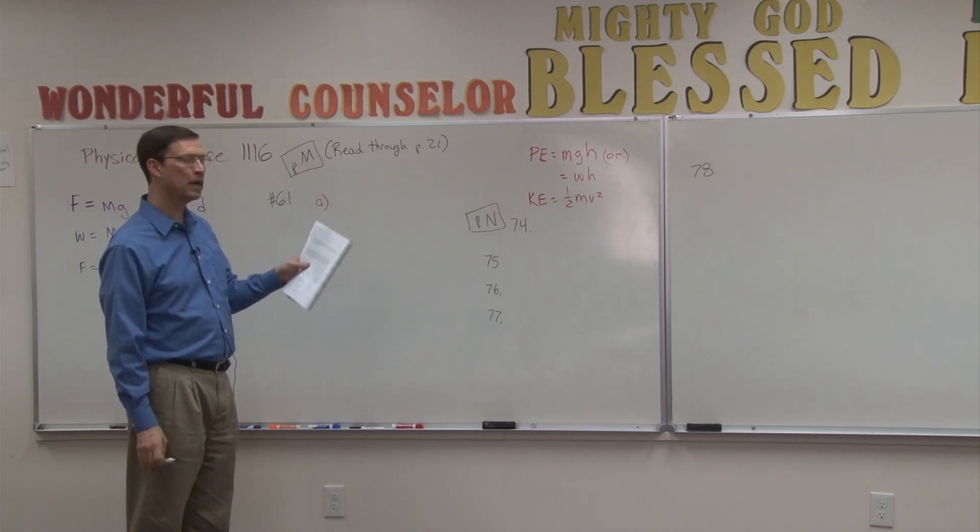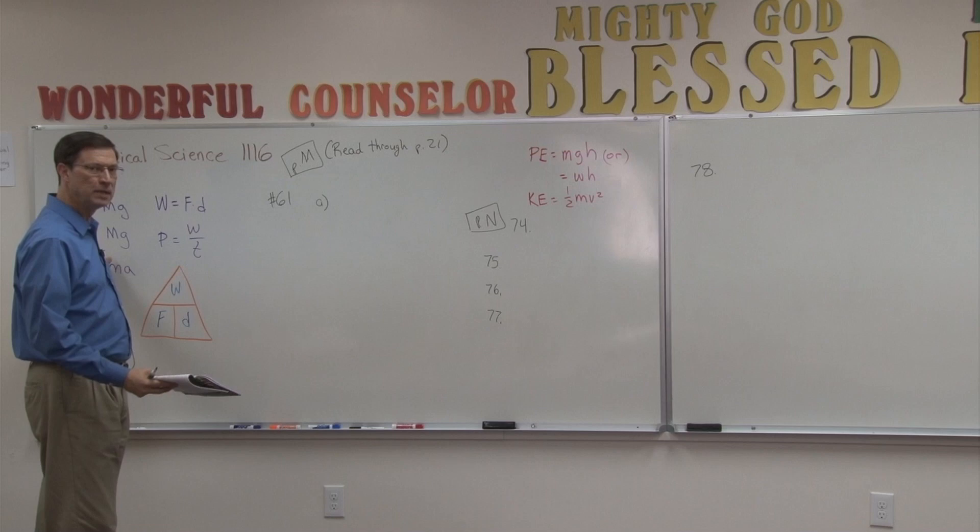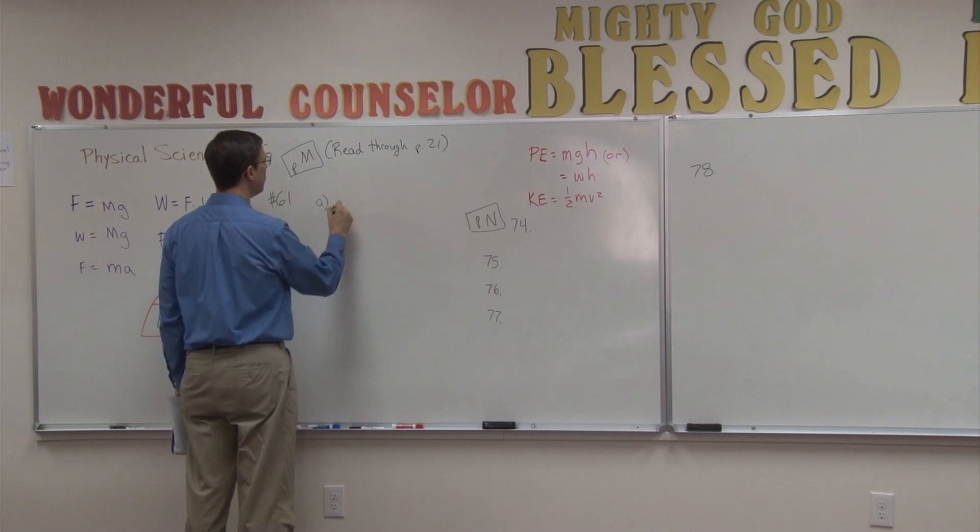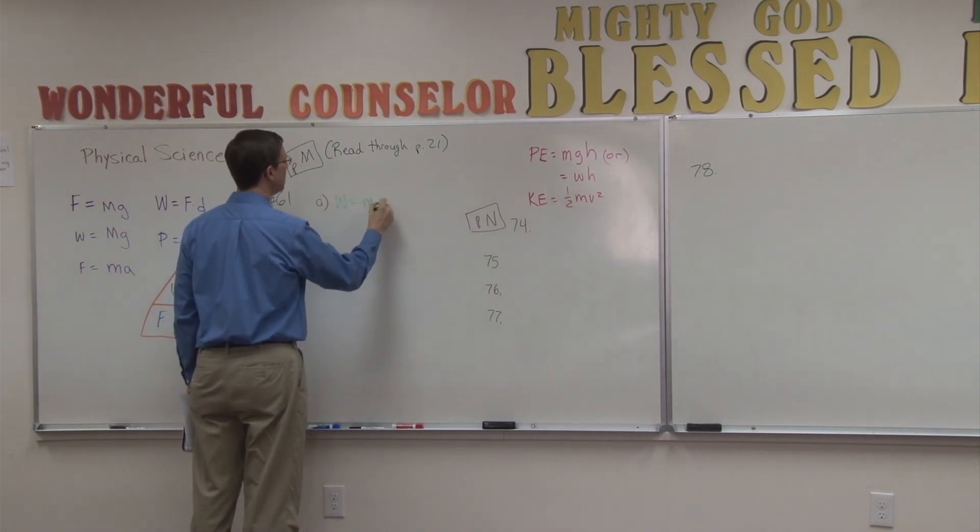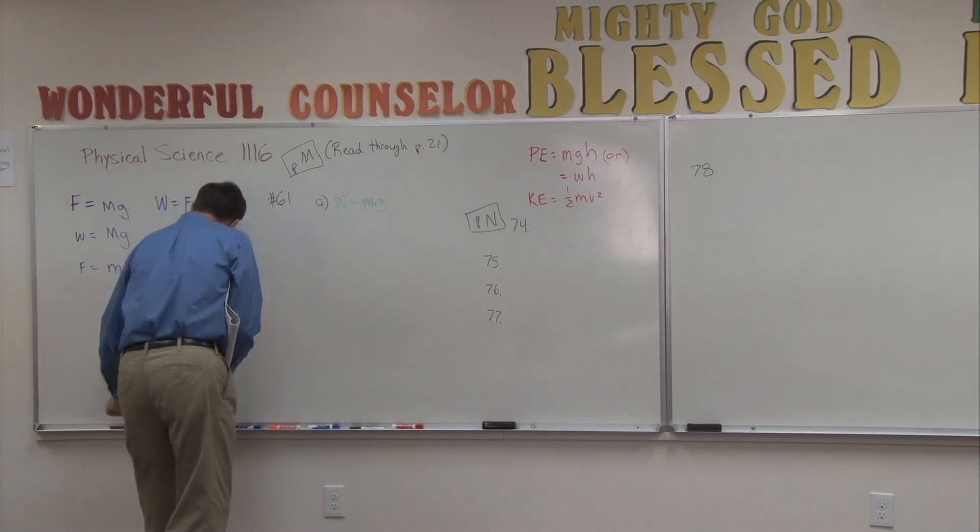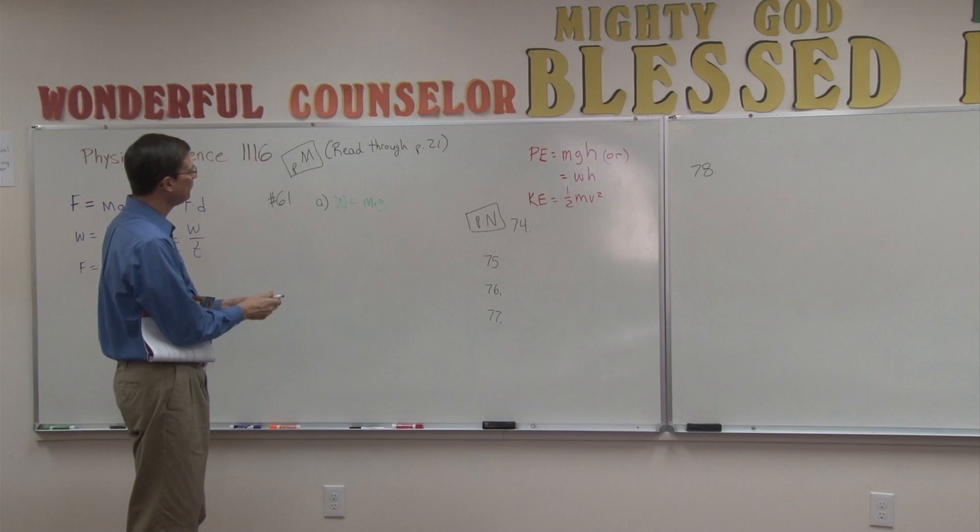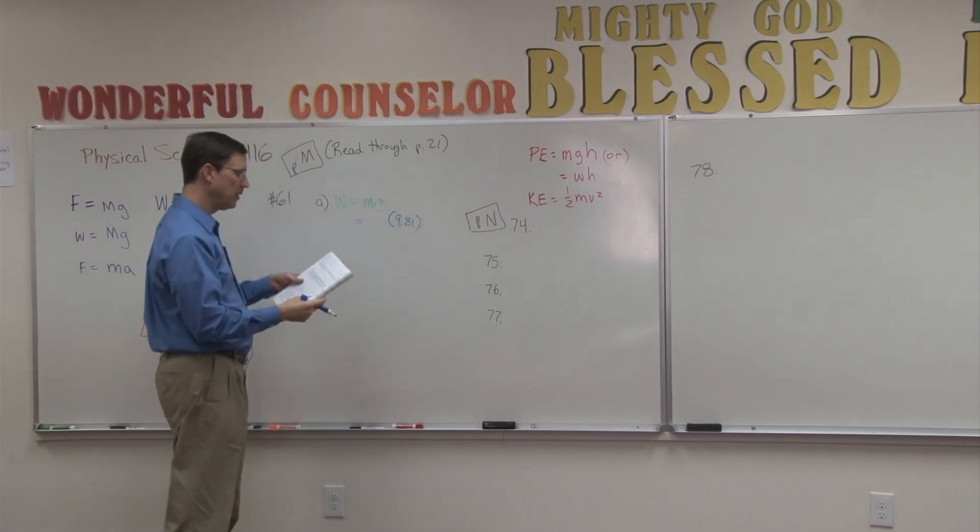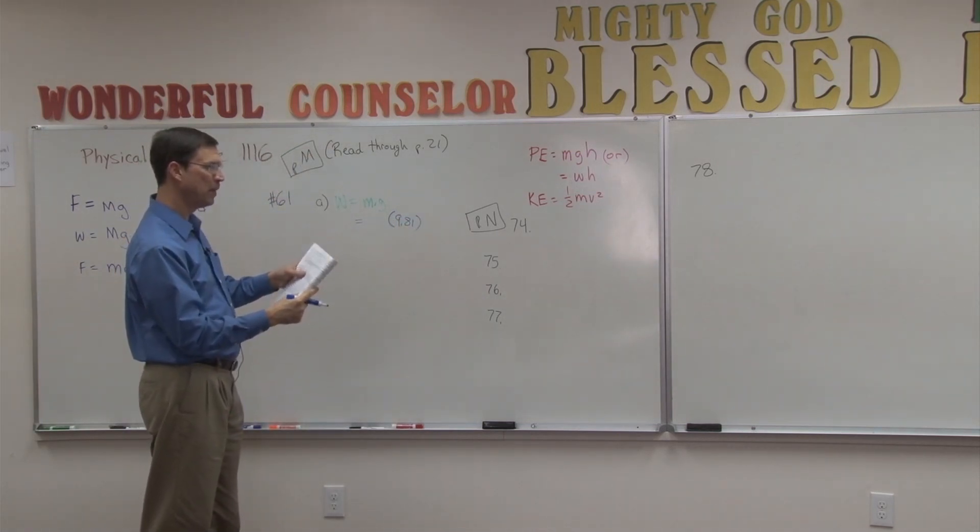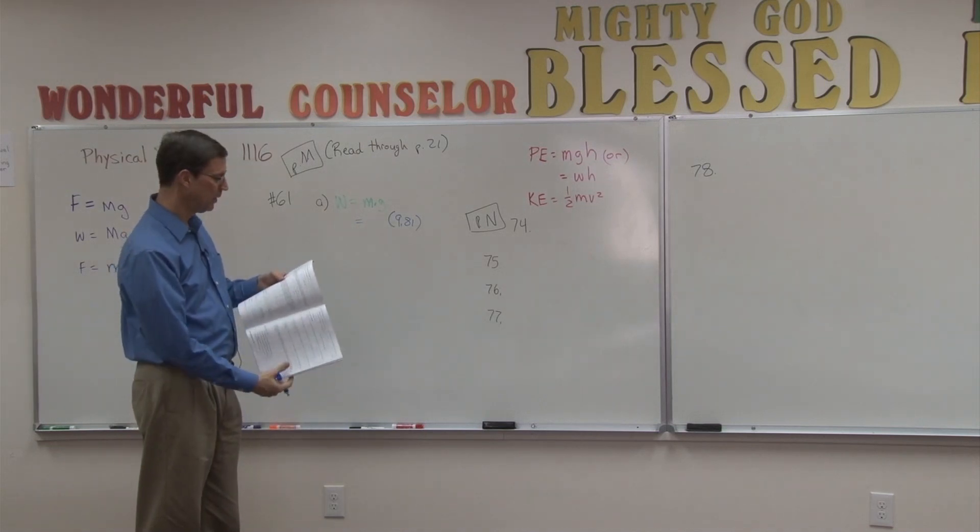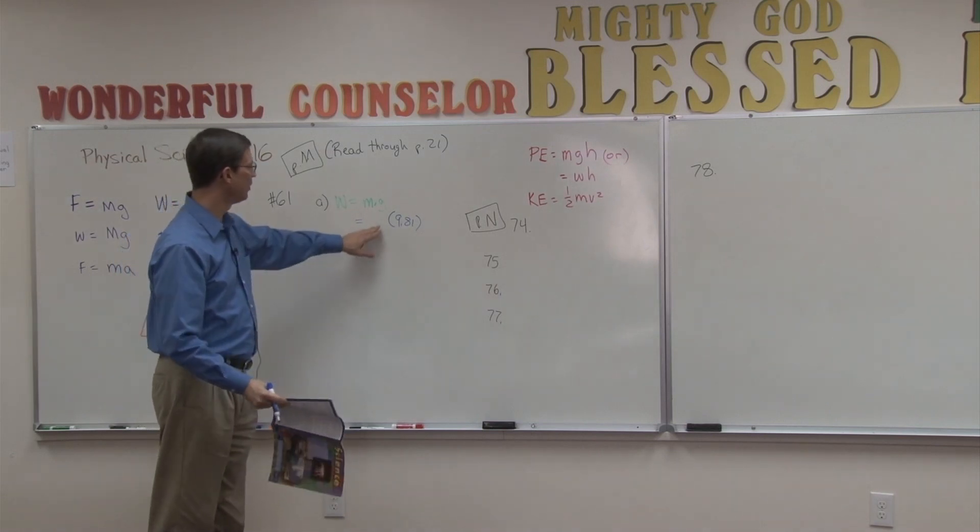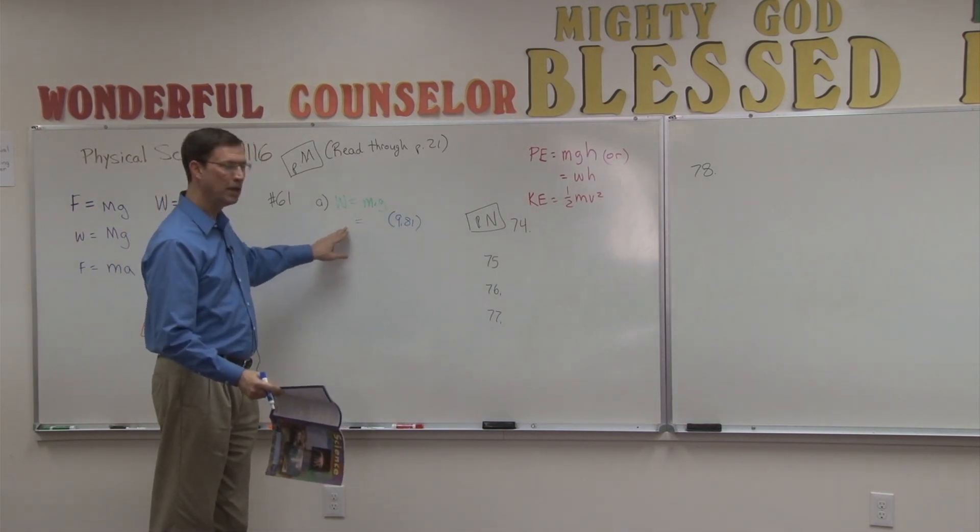For A, it says, how much does the backpack weigh? Alright, so we're talking about weight. Weight is mass times acceleration due to gravity. So for A, we're going to take weight equals mass times acceleration due to gravity. The acceleration due to gravity, that's pretty easy. That's the 9.81. And if you go back and look in the problem, it says that the backpack's mass was—a 610 newton hiker carrying a—and it tells you the mass of the backpack. And that's what you're going to plug in for the mass. Multiply those two together, and you'll have the weight.